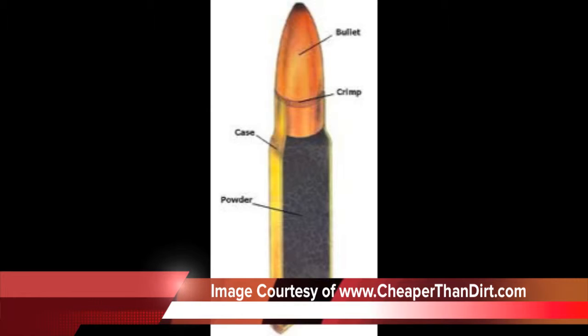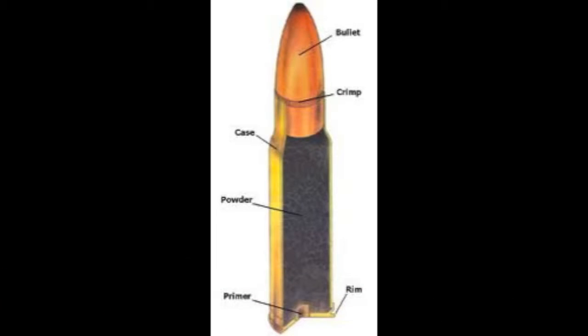Below the case, and what does take up most of the space, is the powder. This is basically a big pile of potential energy. Our goal to get that bullet to move is to somehow turn that potential energy into kinetic energy. And how we do that is at the very bottom, in the middle of the rim, you see the primer. The primer is the catalyst that's going to set the entire chemical reaction off.